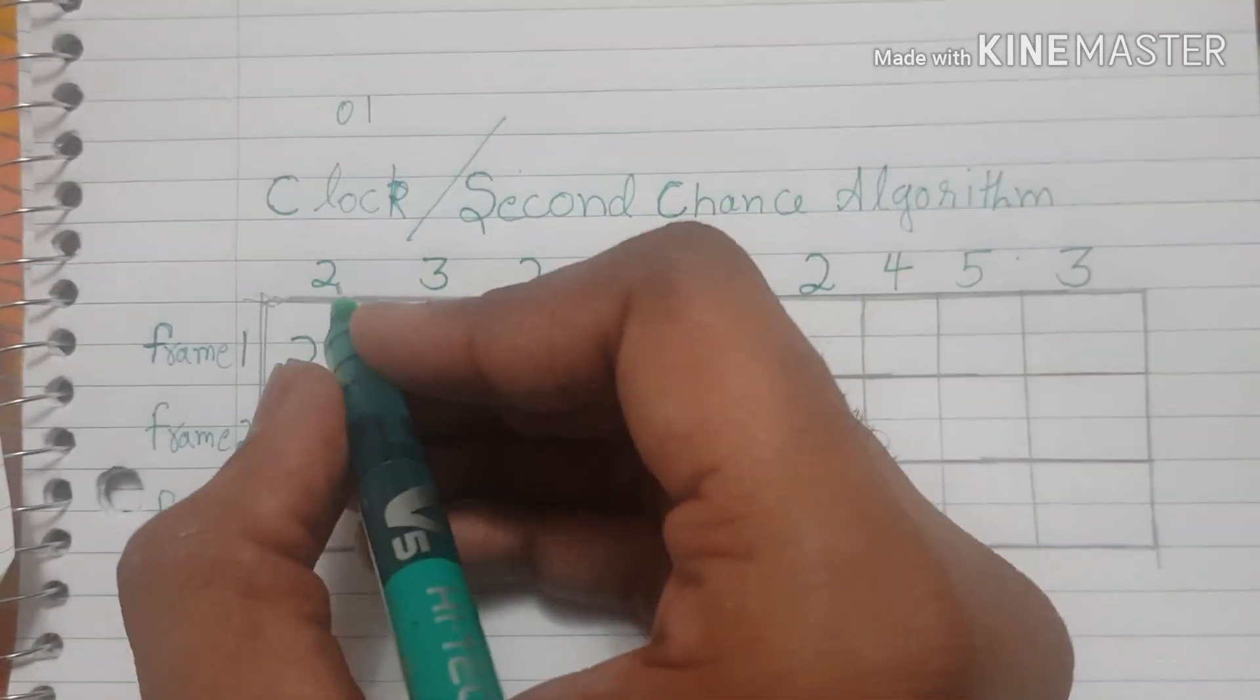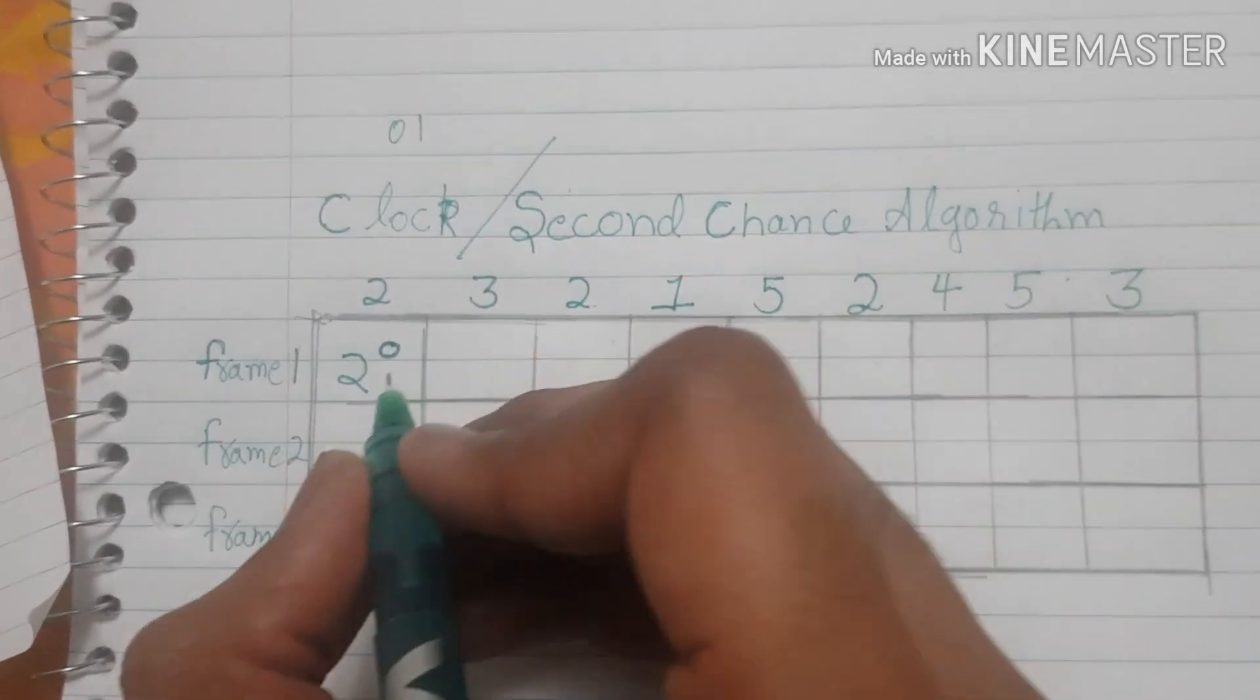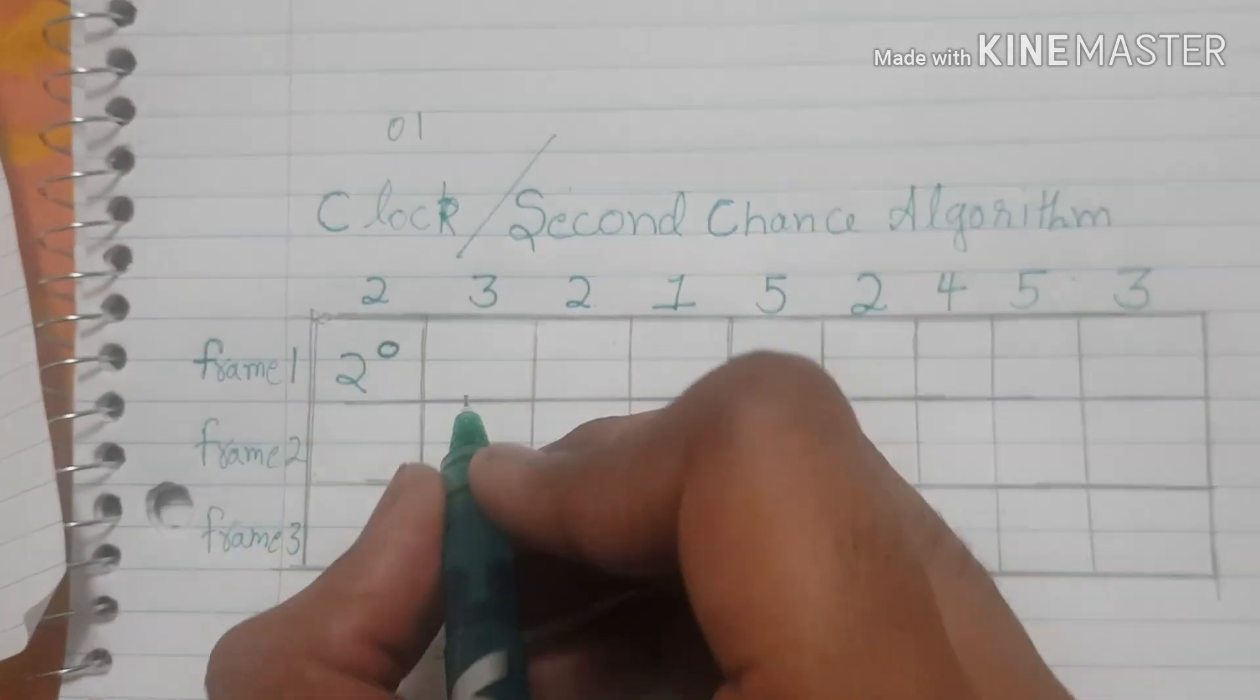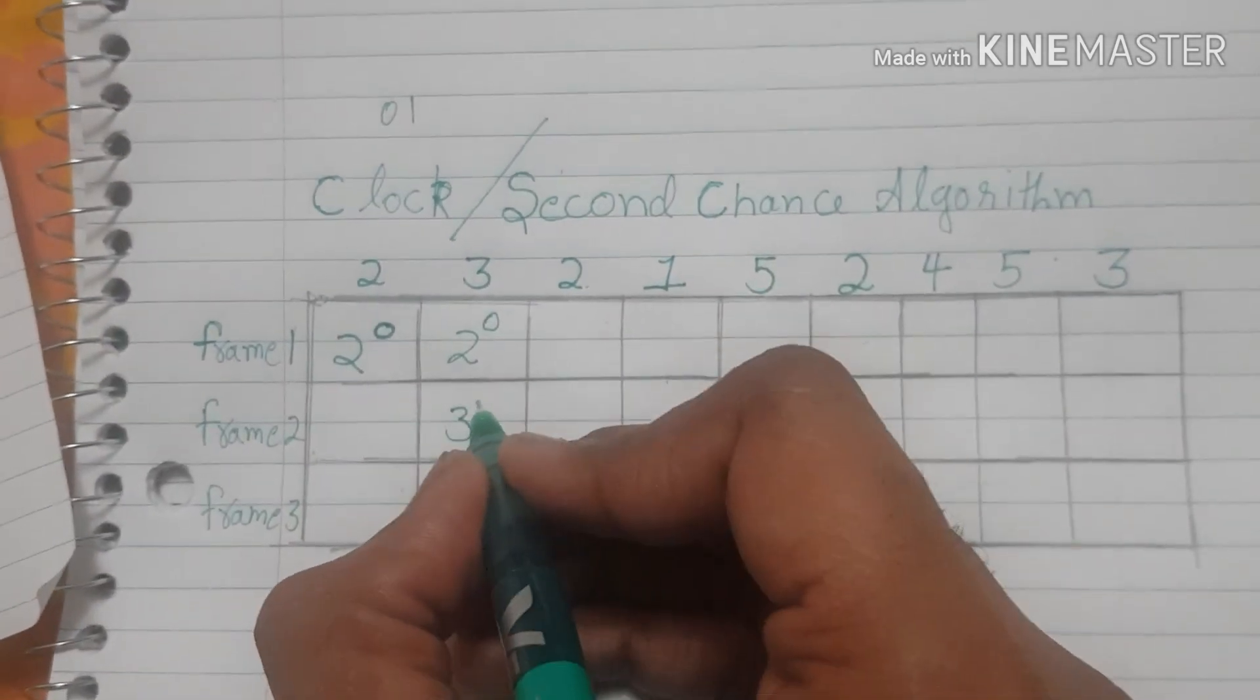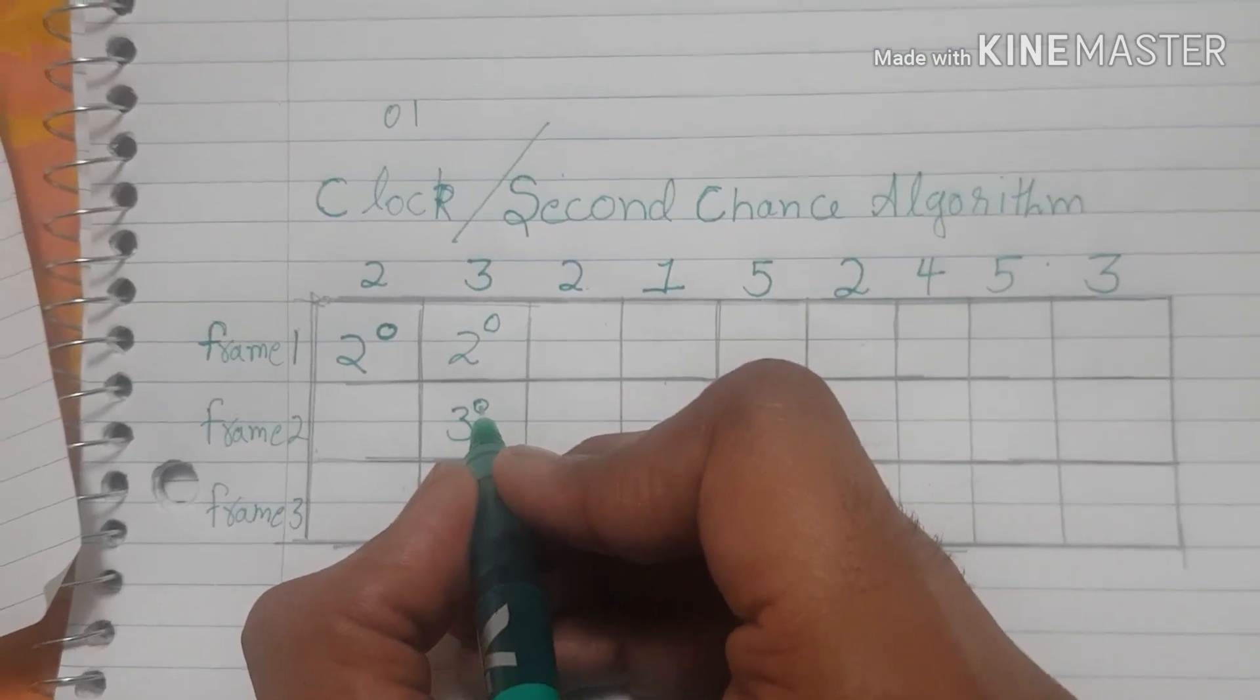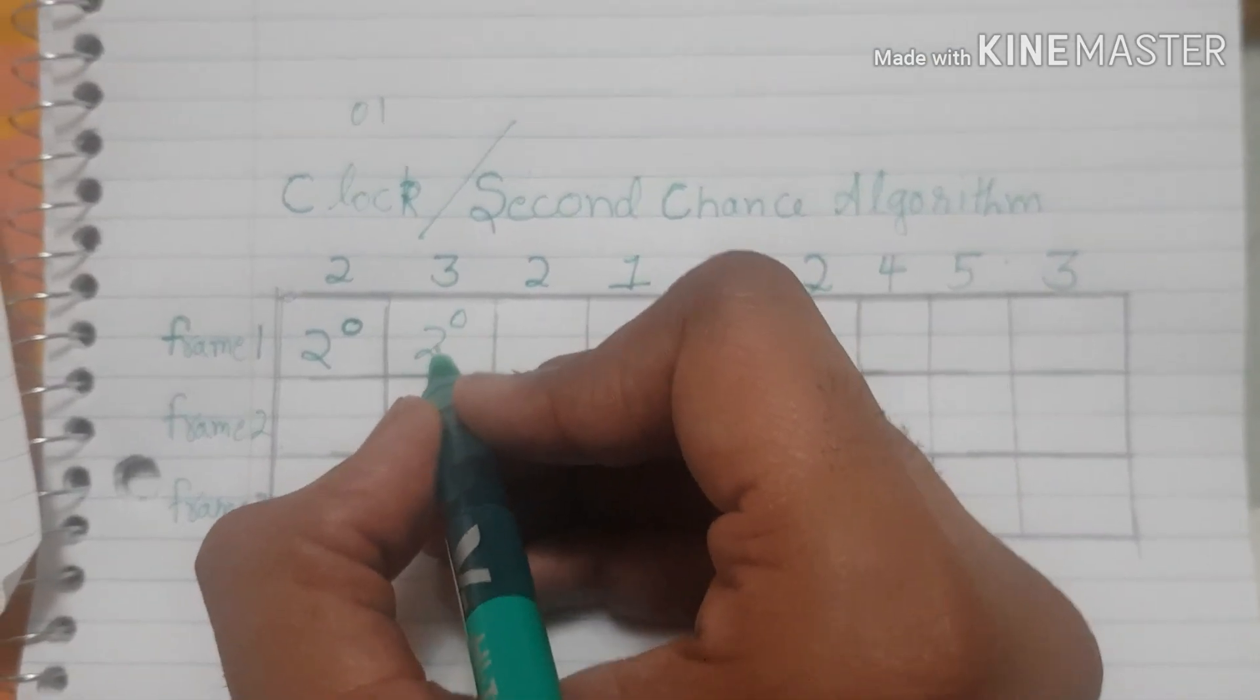The same thing happens whenever we bring a page to a frame, we assign the reference bit the value 0. So we have to bring in 3, so we assign the value of reference bit to 0 and the value of reference bit of 2 was already 0.